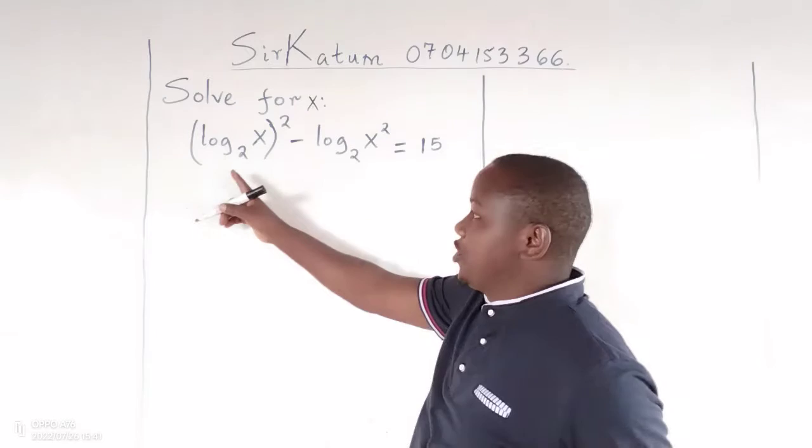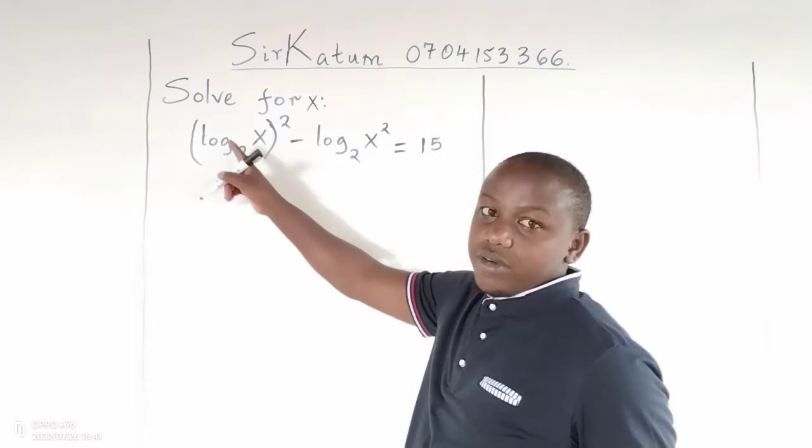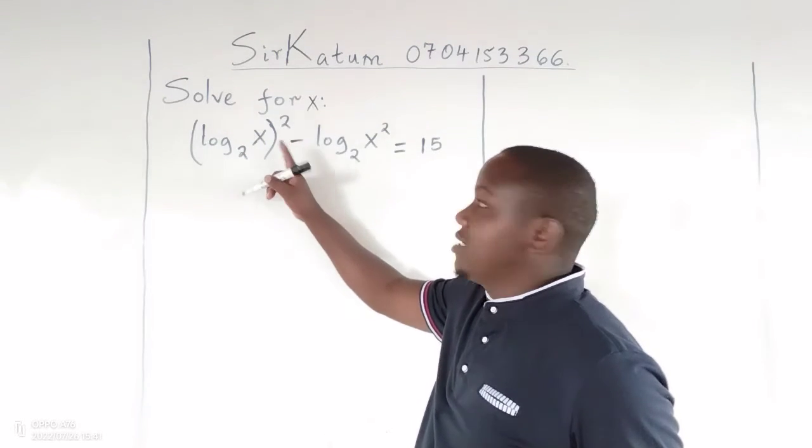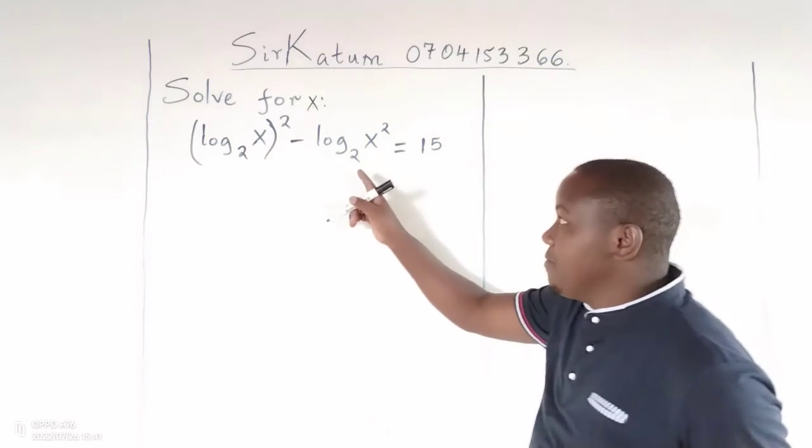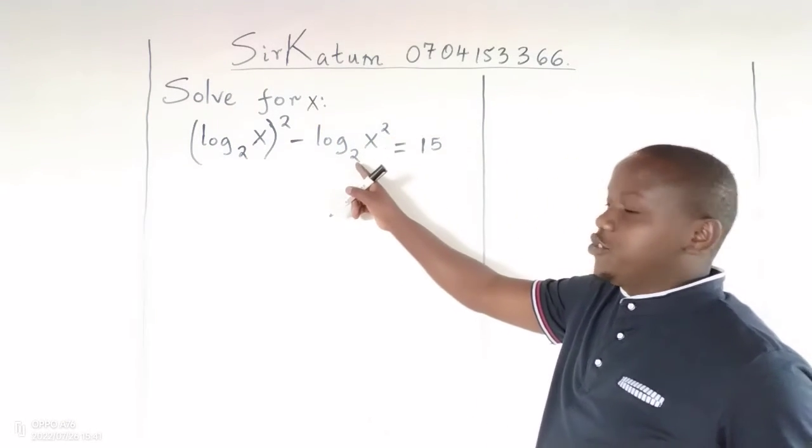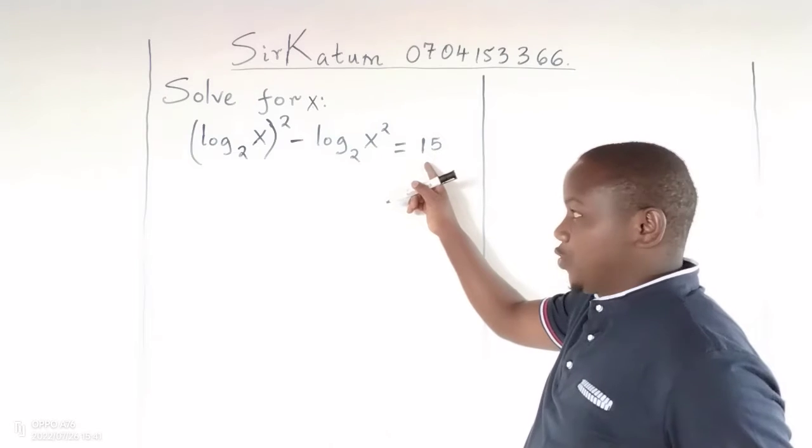In the equation, the logarithm of x to base 2, everything squared, minus the logarithm of x squared to base 2, equals 15.